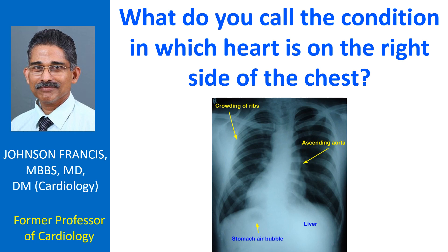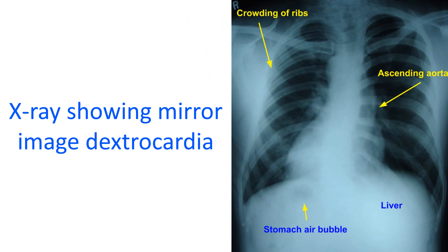If dextrocardia is associated with left-right inversion of all structures of the body, it is known as mirror image dextrocardia. In this situation, the liver will be on the left side instead of the normal right side, and the spleen will be on the right side instead of the normal left side of the abdomen. This condition is usually not associated with any structural disease of the heart.